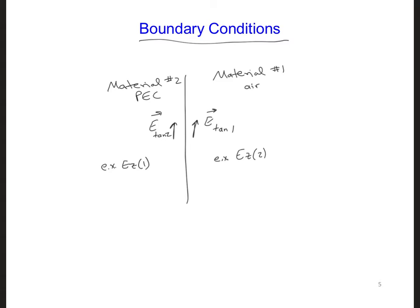Since the tangential electric fields must be continuous across this boundary, we can write that E tan 1 must equal E tan 2. Then, since the tangential electric fields are 0 inside of the PEC, because the conductivity is infinite, then E tan 2 is equal to 0. And since E tan 1 is equal to E tan 2, we can say that E tan 1, just outside the material, must also equal 0.